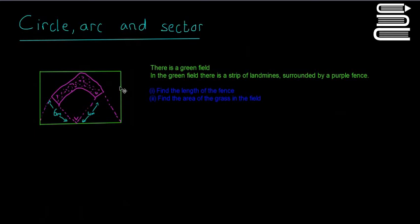We have a green field, and in it there's a strip of landmines surrounded by a purple fence — a circular strip of landmines. If you continue the purple dotted line it would make a perfect half circle in the field, and there's a smaller half circle inside. The radius of the big circle is 6 metres and the radius of the small circle is 4 metres. There's also a right angle showing how wide the strip is.